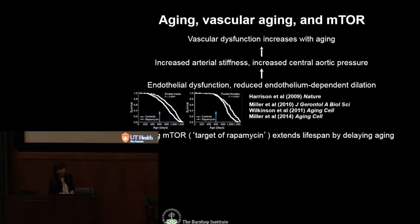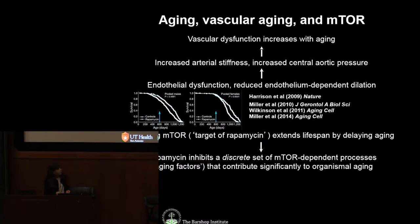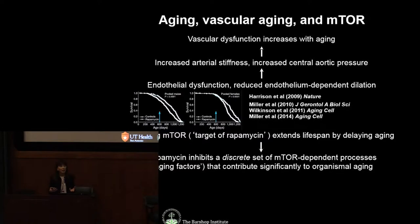One of those possibilities is the goal of my lab: to figure out how aging contributes mechanistically to the pathogenesis of different diseases. What we focus on is diseases of the brain, with a major emphasis on Alzheimer's disease. In the field, and we share this hypothesis, is that even though TOR does many things, there are a discrete set of TOR functions that promote aging, and those can be identified and figured out.